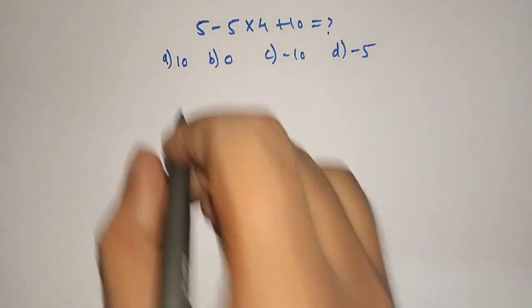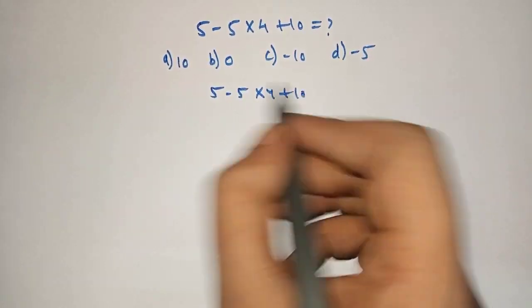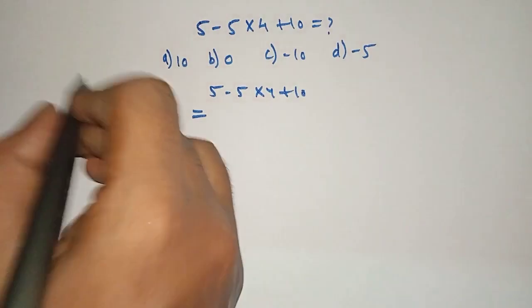So let's solve. 5 minus 5 into 4 plus 10 is equal to, here we will use the rule, BODMAS rule.